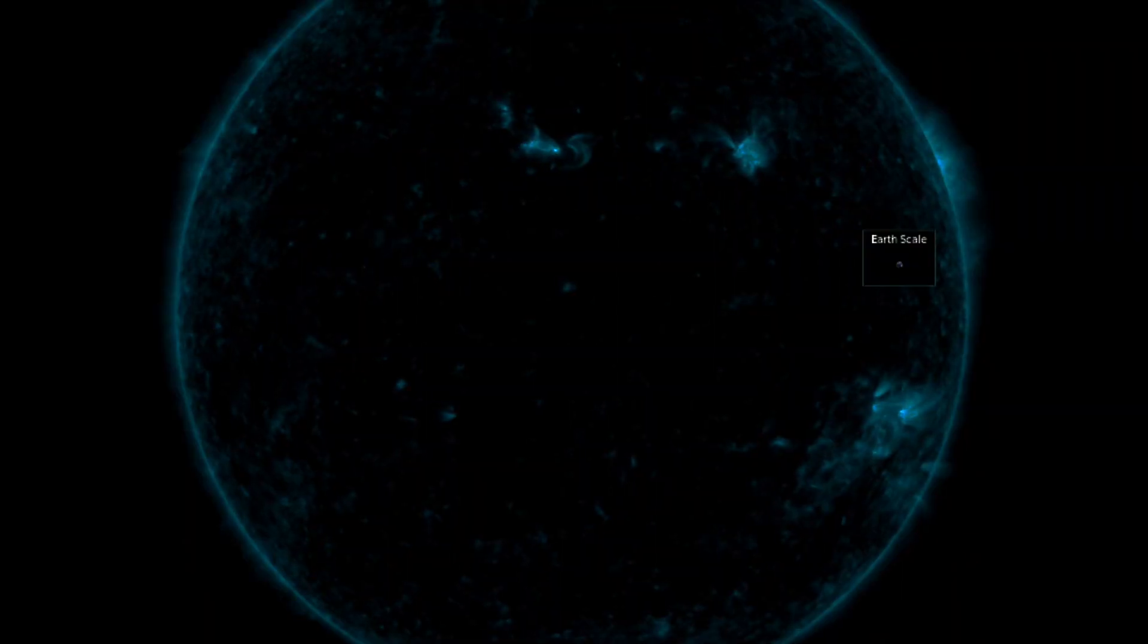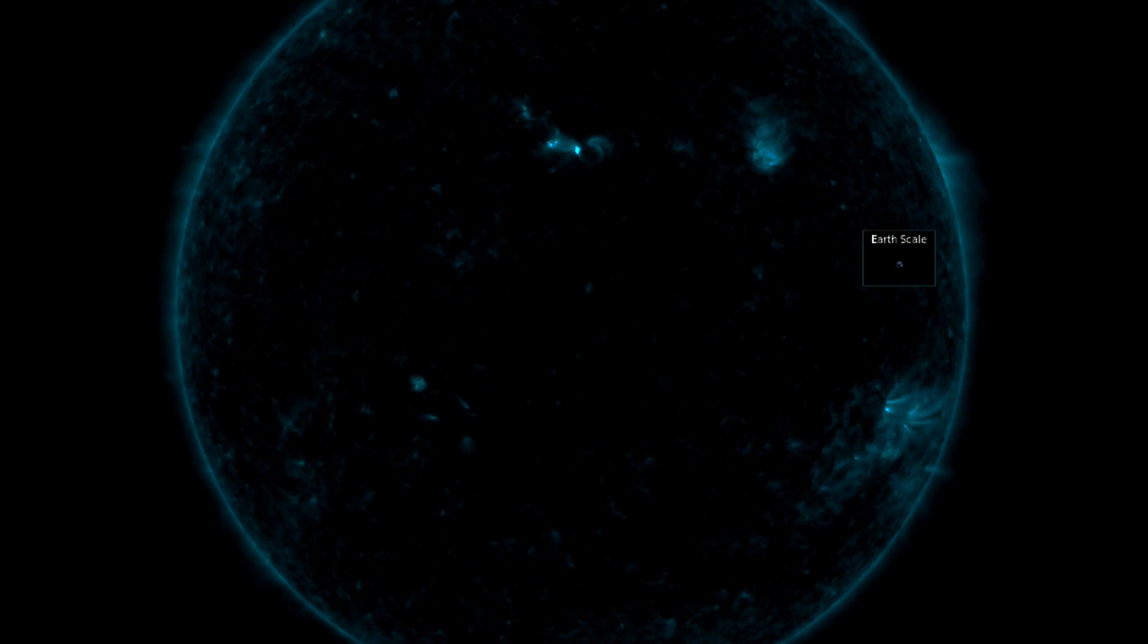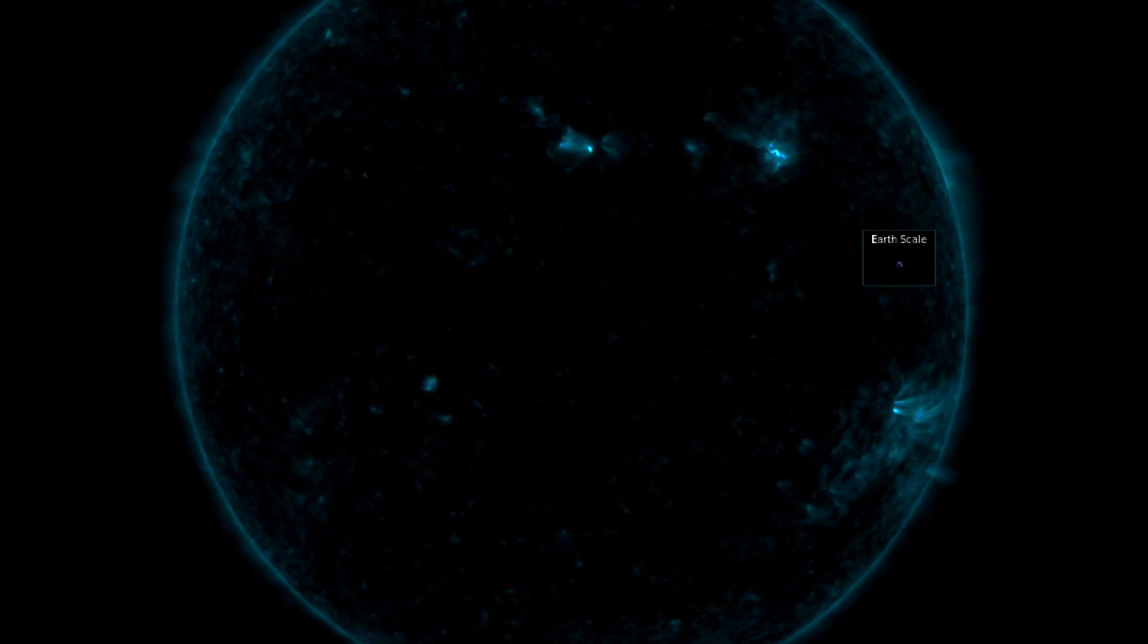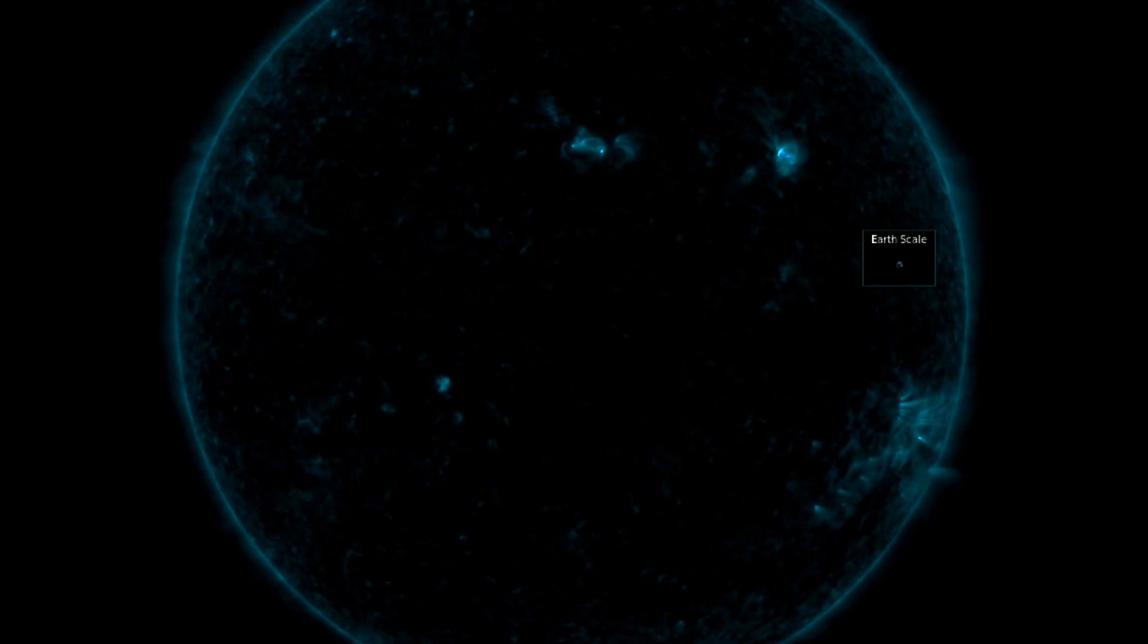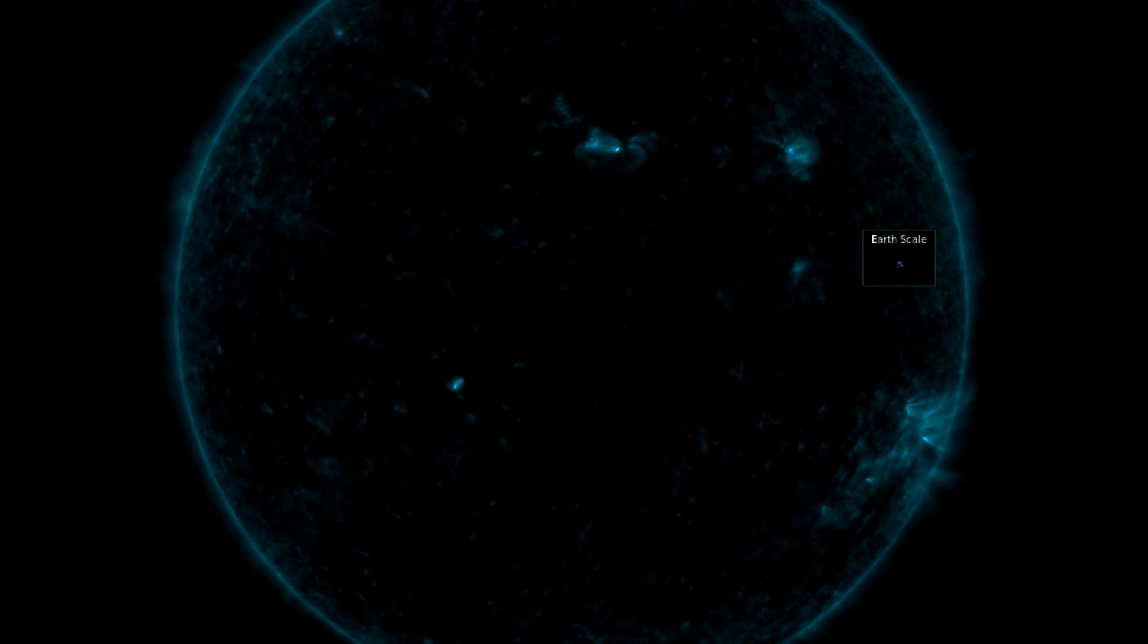We can see small solar flare production, nothing major as the dimmed x-ray flux here of 131 angstrom shows the only real brightness is coming from the active regions, but it's minor.